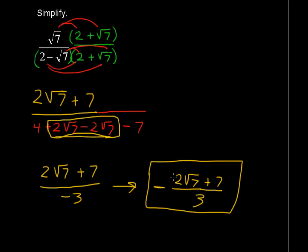By the way, if you wanted to move it up to the numerator, you would have negative 2 square roots of 7 minus 7 because you would have to distribute that negative sign throughout the numerator. Okay, that is using conjugates.